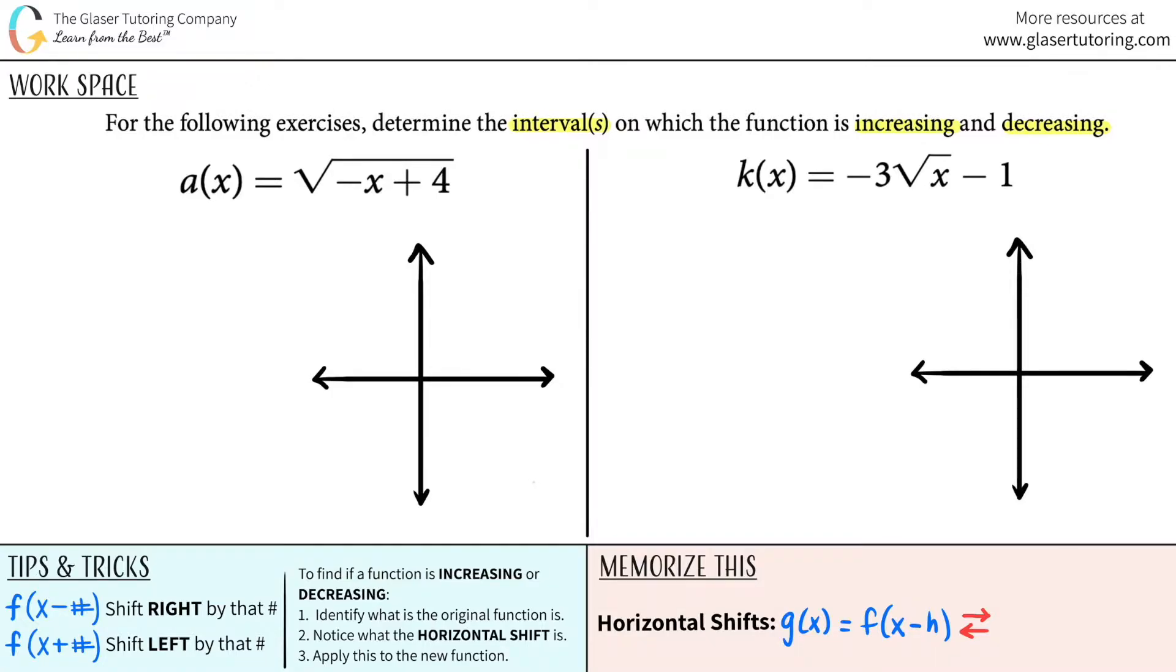Okay, so I have two functions over here, and I just have to figure out where on the graph they are increasing and where they are decreasing by understanding what they look like on the graph. Okay, so I wrote down a little cheat sheet here to help guide you guys to do this problem.